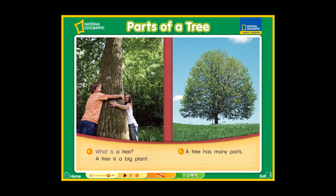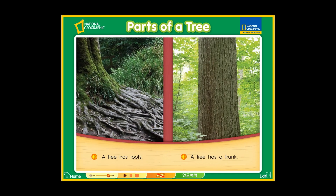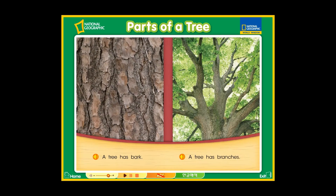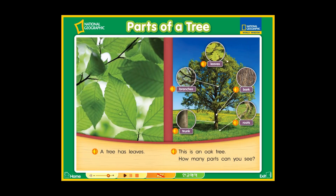What is a tree? A tree is a big plant. A tree has many parts. A tree has roots. A tree has a trunk. A tree has bark. A tree has branches. A tree has leaves.